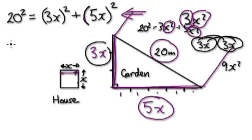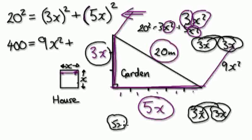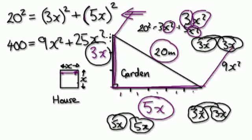Now, let's try and work this out. 20 squared, 2 times 2 would be 4. There would be 2 zeros. And then this would be 3x. So, 3x times 3x. So, 3 times 3 would be 9. And then x times x. It would be x squared. Plus, this one here would be 5x times 5x. So, 5 times 5 would be 25. And then you've got the x squared.